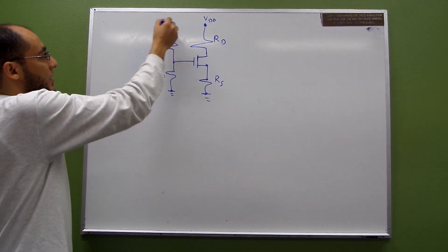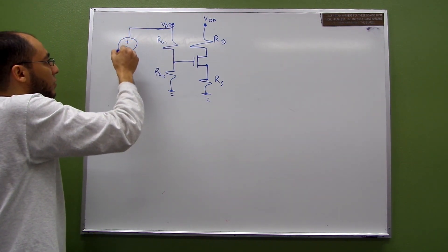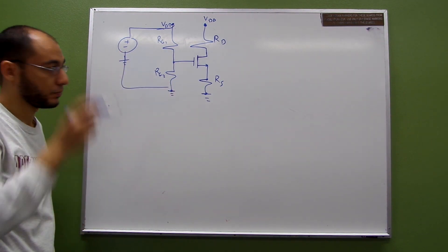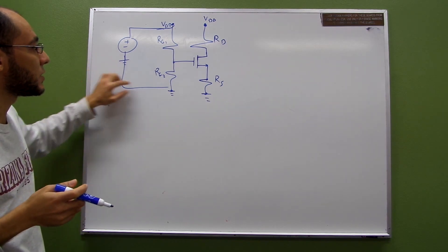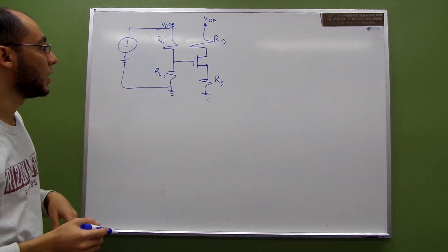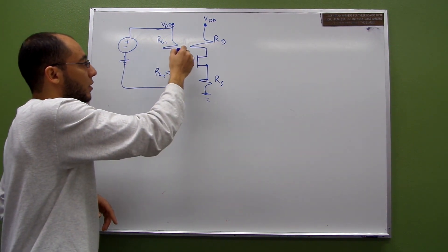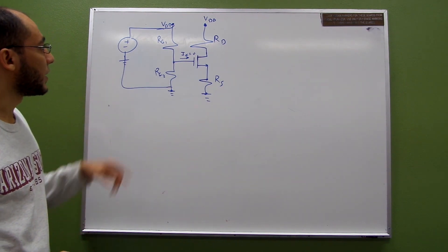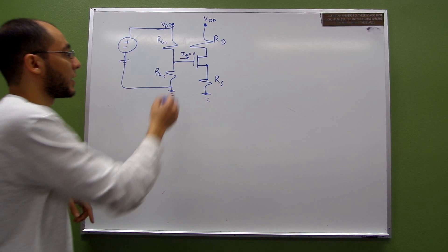This circuit means you have a voltage source connected to ground, so VDD is virtually connected here by convention. We assume the gate current IG equals zero, and that's why we can apply the voltage divider rule to find the gate voltage.